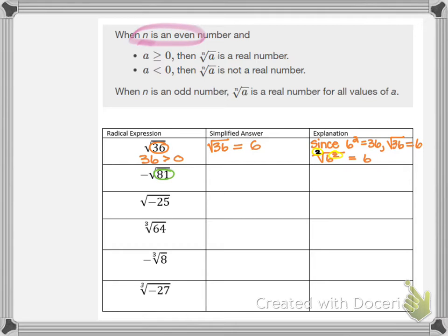Let's look at the next one. We do see a negative sign, but the negative sign is outside of the radical. So 81 is the radicand and 81 is greater than 0, which means we should get a real number. The negative of the square root of 81 equals negative 9. Think of that negative sign as negative 1 being multiplied by the square root of 81, so negative 1 times 9 equals negative 9.